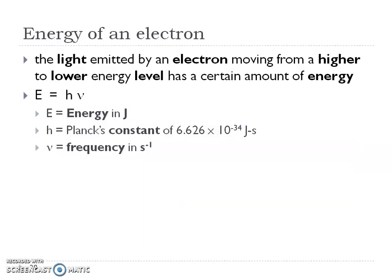Electrons are moving, and if electrons are moving, they have energy. The light emitted from an electron goes from a higher energy level to a lower energy level. We now have an equation: energy equals Planck's constant — which will be given to you — times frequency. So now we can use this to relate frequency and energy.